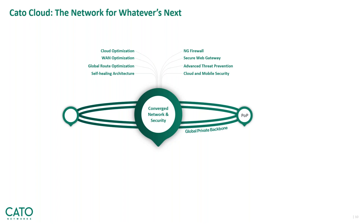On the security side, we have a built-in next-generation firewall — not a virtual machine of a third-party firewall, but our own homegrown next-gen firewall designed to interact natively with the other security and networking components. We have built-in secure web gateway capabilities, advanced threat prevention including multiple anti-malware engines and intrusion prevention as a service, and full cloud and mobile security which gives you visibility to all cloud applications your users are using, with granular access control on who accesses what applications and under what conditions.